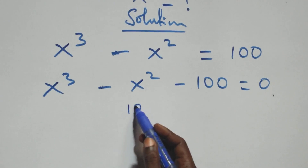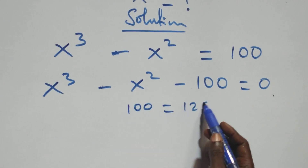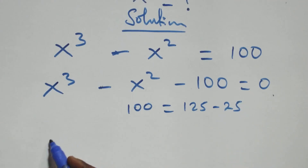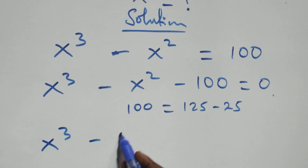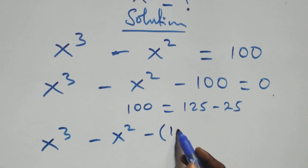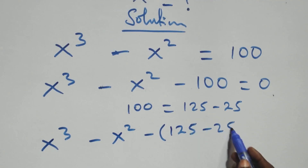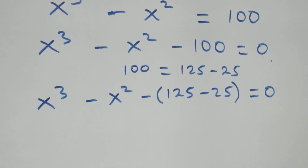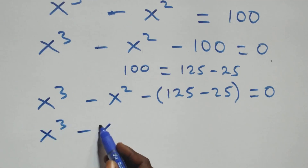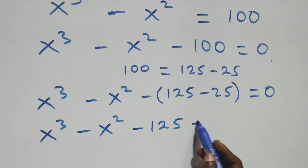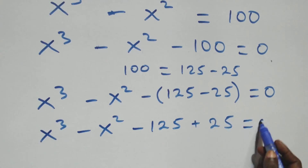Here we can express the constant as 125 minus 25. So everything becomes x cubed minus x squared, then minus, open brackets, 125 minus 25, close brackets, equals zero. Opening the bracket gives us x cubed minus x squared, minus 125 plus 25, equals zero.